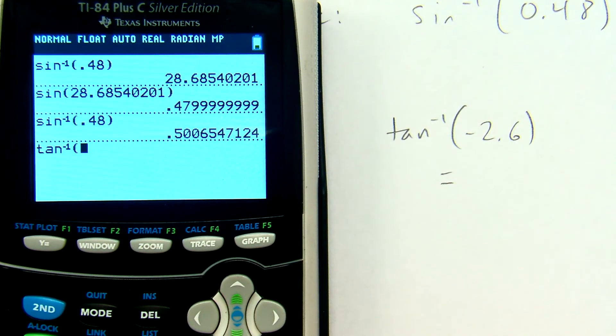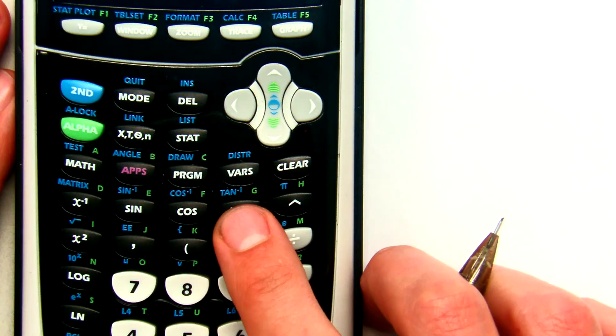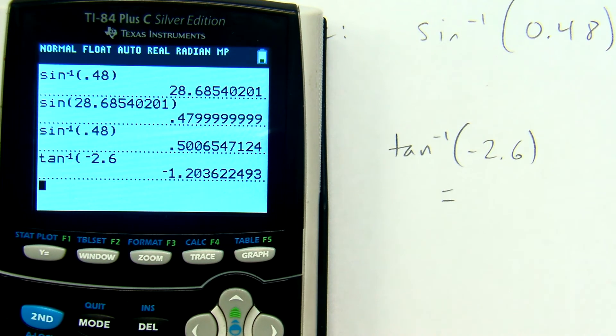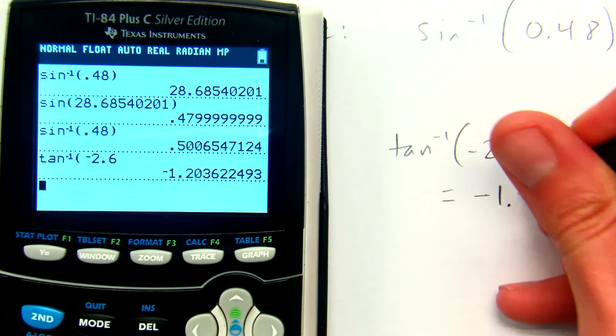Inverse tangent. The inverse tangent button is just above the regular tangent button. Inverse tangent of negative 2.6 gives me negative 1.2 radians.